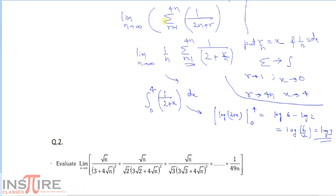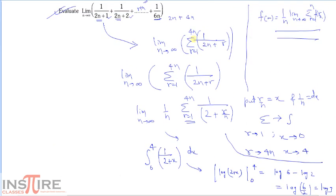Let me explain once more what we did. First, we converted the expression to sigma form. Every term in the denominator contains 2n, and the last term is 6n, so we add 4n to 2n, meaning r goes from 1 to 4n, giving us sigma of 1/(2n + r). Then we took n common from the denominator.